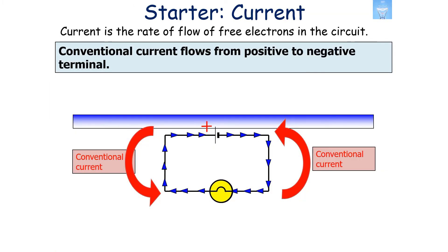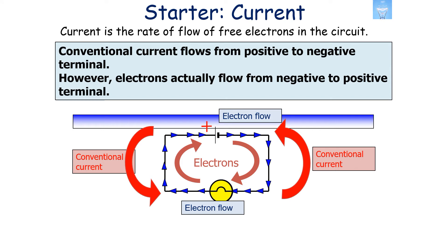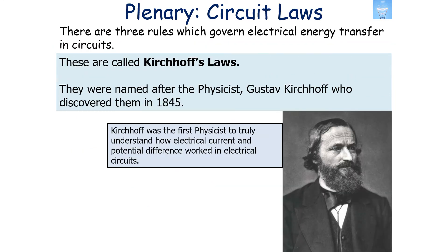Current is the rate of flow of free electrons or charge in a circuit. Conventional current flows from positive to negative, however the electrons actually flow from negative to positive. There are three rules which govern electrical energy transfer in circuits, and these are called Kirchhoff's laws, named after the physicist Gustav Kirchhoff, who discovered them in 1845.